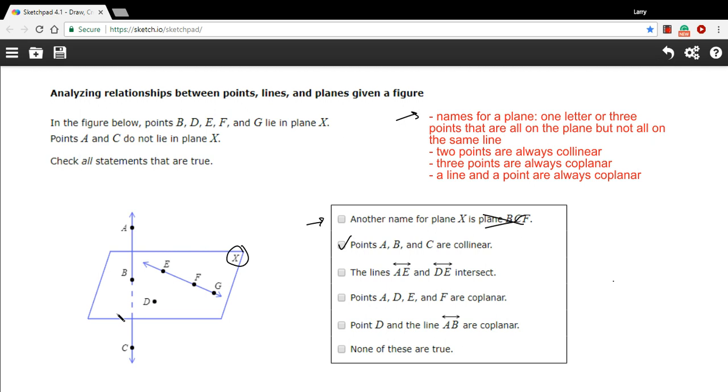If you had been given the statement points D and F are collinear, even though you don't see a line there, you should say that's true as well. Because any two points are always collinear. You can always draw a line between them. So even if the line's not there, you should say that that's true.